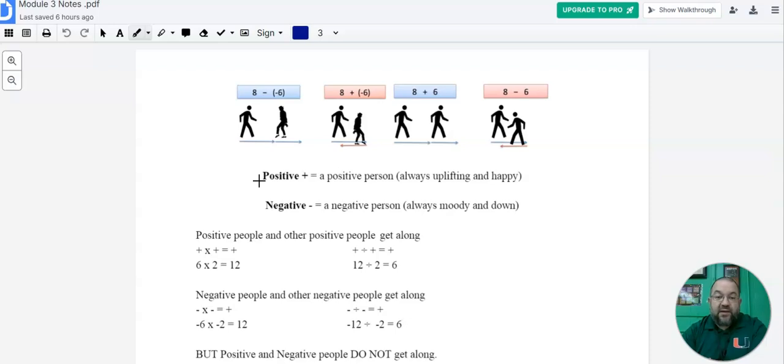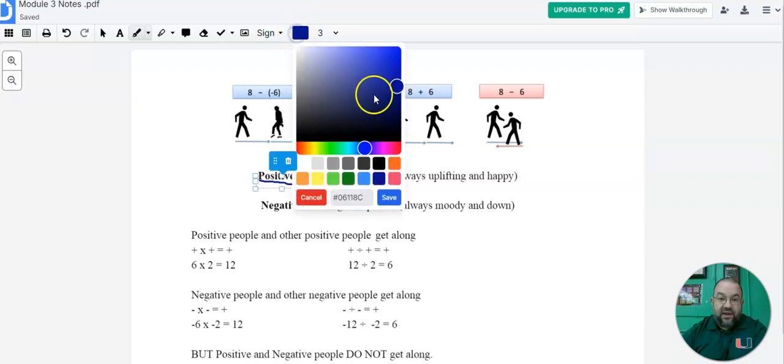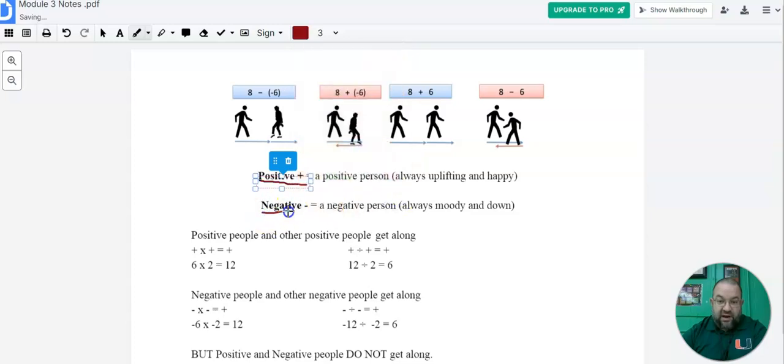Positive people are very uplifting and they're always happy for the most part. And then you got negative people, and negative people tend to be maybe moody and down. So I'm going to underline the positive here in blue. And then I'm going to underline in red for negative. So we have those there.